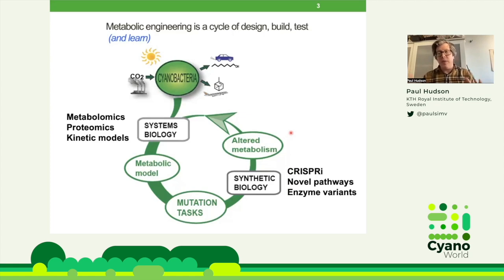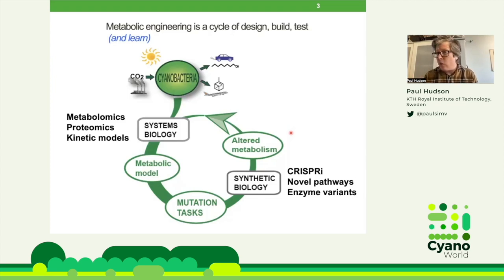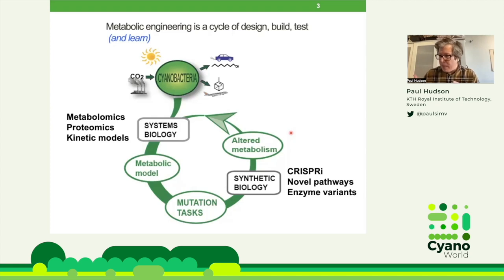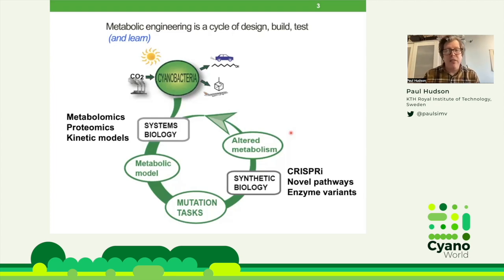We get out of this an altered metabolism, and of course we have to do the cycle again and again. It used to be that this cycle would take a long, long time — you could do one cycle for one PhD. But nowadays our ability to do all of these things is much faster. Now you usually do many in parallel and try to build a knowledge base, either within one lab or across all of our labs, using each other's data to improve these models.